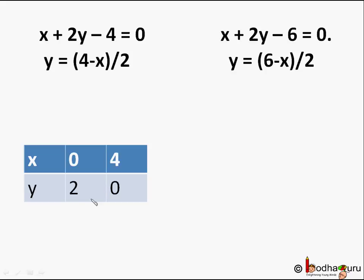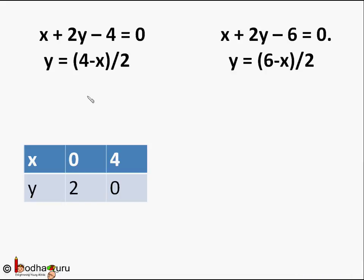Now we take some coordinates for the first equation. When x = 0, y = (4 - 0) / 2 = 4/2 = 2. When x = 1, 2, or 3, they are not a correct choice because 4 - x would be indivisible by 2, meaning we will get y as a fraction which makes it harder to plot. So we take x = 4, giving y = (4 - 4) / 2 = 0/2 = 0.